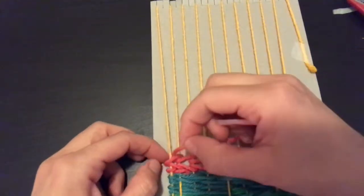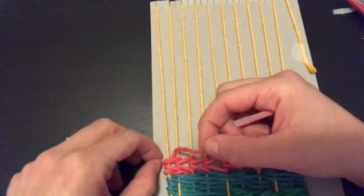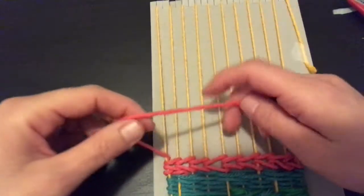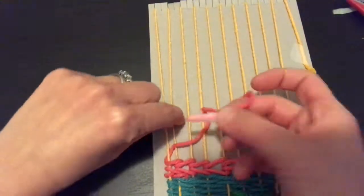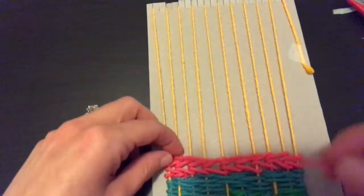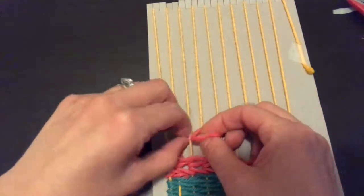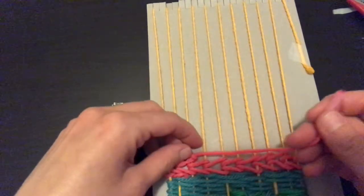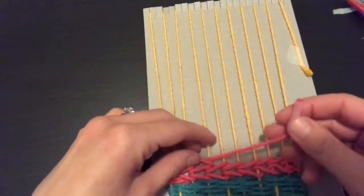And now we've gone around that last warp yarn piece and we're changing directions. So I'm gonna go over, around, behind—sorry, around the top, over the next one, behind it, around it. Over this one, behind, and around. Over, behind, and around.